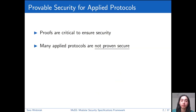We know that proofs are critical to ensure security, and we've been proving the security of well-defined cryptographic primitives like pseudorandom functions and encryption schemes for a long time. For example, probabilistic encryption by Goldwasser and Micali was published already in 1984. Provable security is well established, and we also know that proving the security of a primitive is not enough to guarantee the security of a whole system or protocol using the primitive.